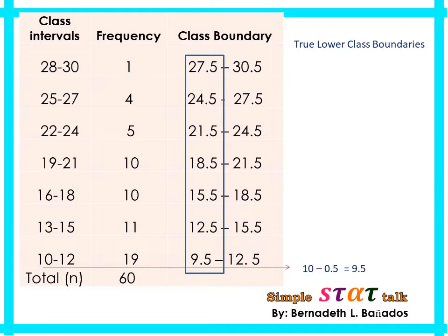Where does 0.5 come from? That is half of our precision value. If you can recall from my previous video, I introduced the precision values. When the given data set is a whole number, the precision value is 1. So for this example, our given data set is whole number, which means the precision value is 1. Half of that is 0.5. That is why to obtain the first true lower class boundary, we subtract 0.5 from 10, which equals 9.5.